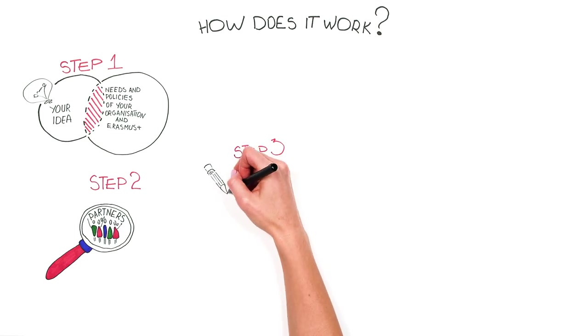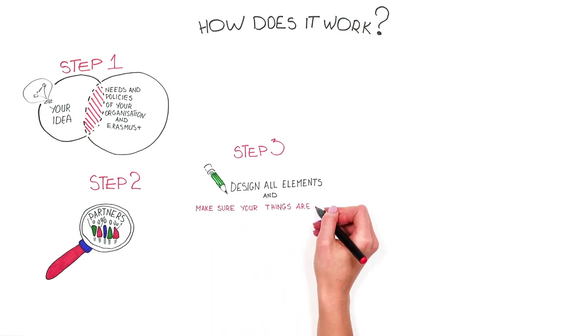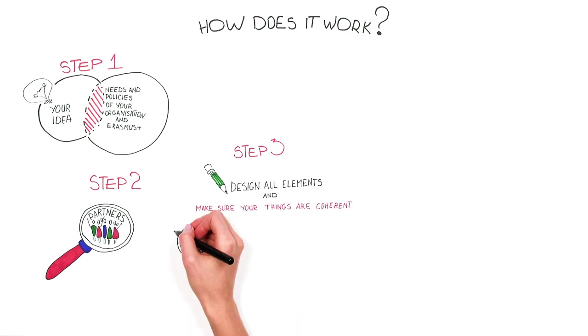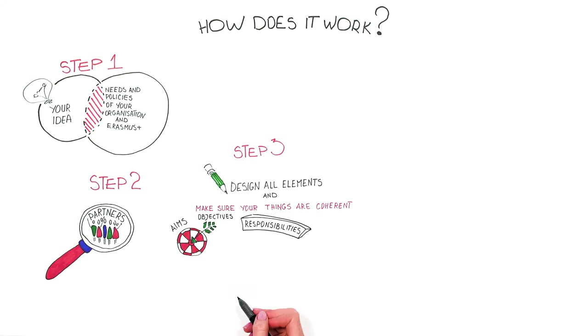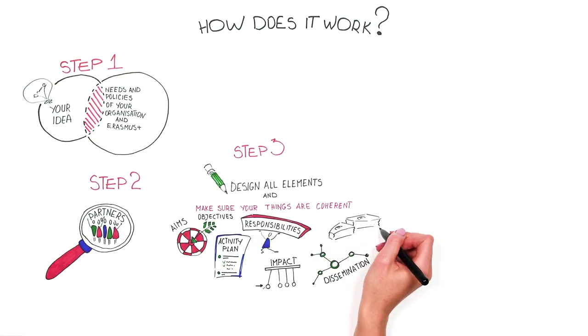Step 3: Design all elements of the project together – management, budget, programme, division of tasks, planning, and dissemination of the expected outcomes. Make sure your aims and objectives, responsibilities, activity plan, impact, dissemination, and budget are coherent.